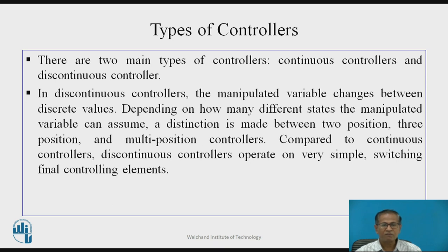Let us see types of controllers. Basically there are two types: continuous controllers and discontinuous controllers. In a discontinuous controller, the manipulated variable changes between discrete values. Depending on how many different states the manipulated variable can assume, a distinction is made between two-position, three-position, and multi-position controllers. Compared to continuous controllers, discontinuous controllers operate on very simple switching final controlling elements.